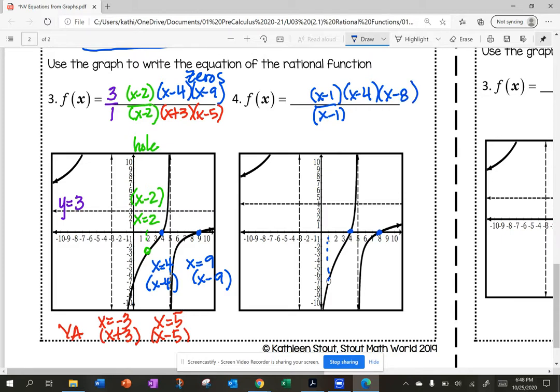My vertical asymptotes. X plus three and x minus five. And then my horizontal asymptote at four. So I want a ratio of four to one. How did you do?